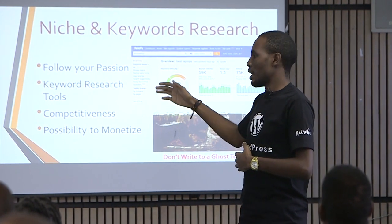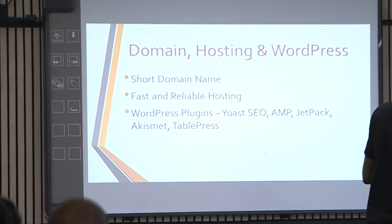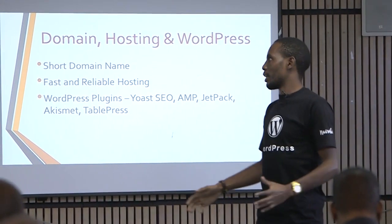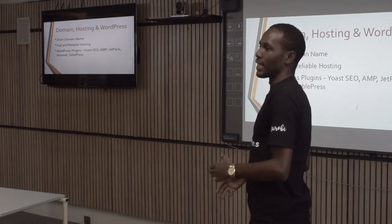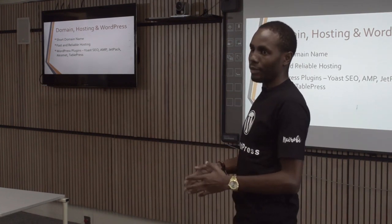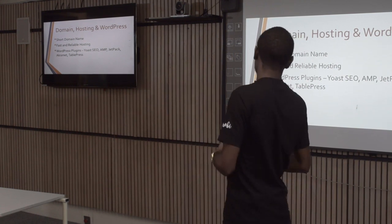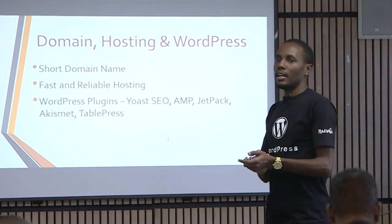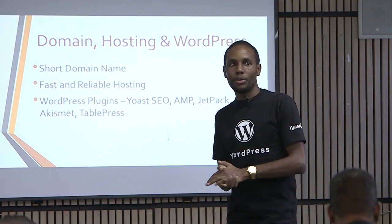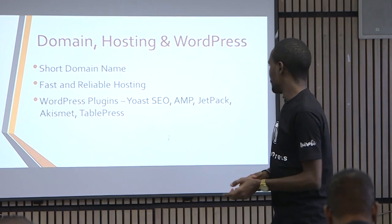For laptops, you can become an affiliate to someone who sells them — for example, Amazon — and make a commission. When it comes to domain, hosting, and WordPress: your domain name has to be short, something people can remember easily, and something that reflects what you're writing about. For hosting, choose something reliable and fast — for example, SiteGround. In WordPress, you need to use SEO plugins, which are helpful for search engine optimization.